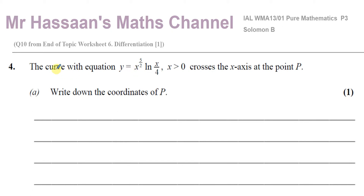This question is also number 10 for my differentiation end of topic worksheet for chapter six of P3, differentiation one. This is about a curve with equation y equals x to the power of five over two times ln of x over four, where x is greater than zero. It says it crosses the x-axis at the point P — write down the coordinates of point P, one mark.